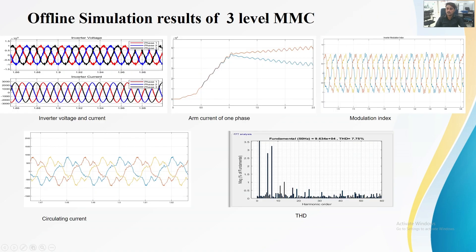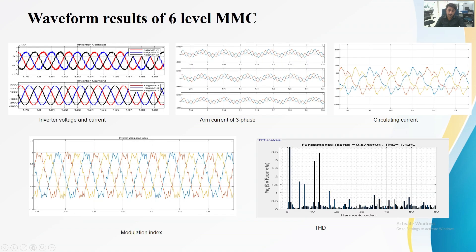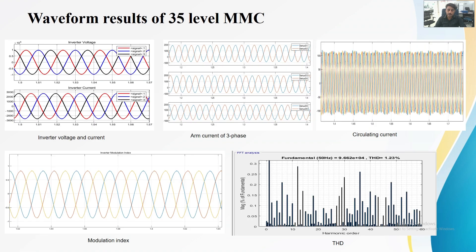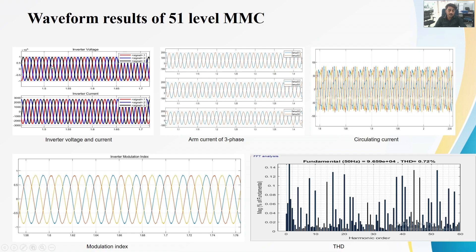These are the offline simulation results for different levels. When we increase the number of levels of the MMC, the inverter voltage waveforms and current waveforms become smoother and smoother, and after specific levels they become very nearly sinusoidal. At low levels, there are many distortions in the voltage and current waveforms. When we increase from 3 to 6 levels, it becomes much smoother, and at 9, 35, and 51 levels, the results are nearly sinusoidal. Also, the circulating current is reduced with increasing levels, and the modulation index is approximately 0.8 as required.